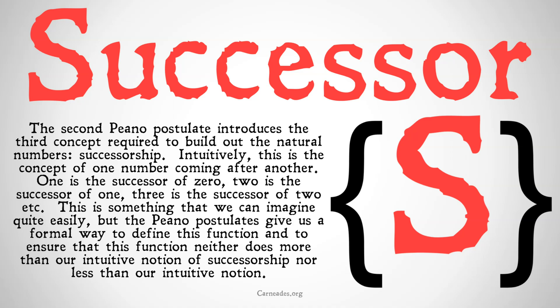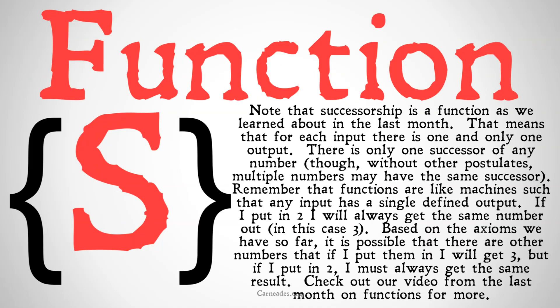This postulate alone isn't going to do all of that work, but it starts us on that path. It's important to note that successorship is a function, as we learned about last month, or at least it will be once we've fully defined it. This means that for each input there's one and only one output. There is only one successor of any number, though without other postulates, multiple numbers might have the same successor. Functions are like machines such that any input has a single defined output.